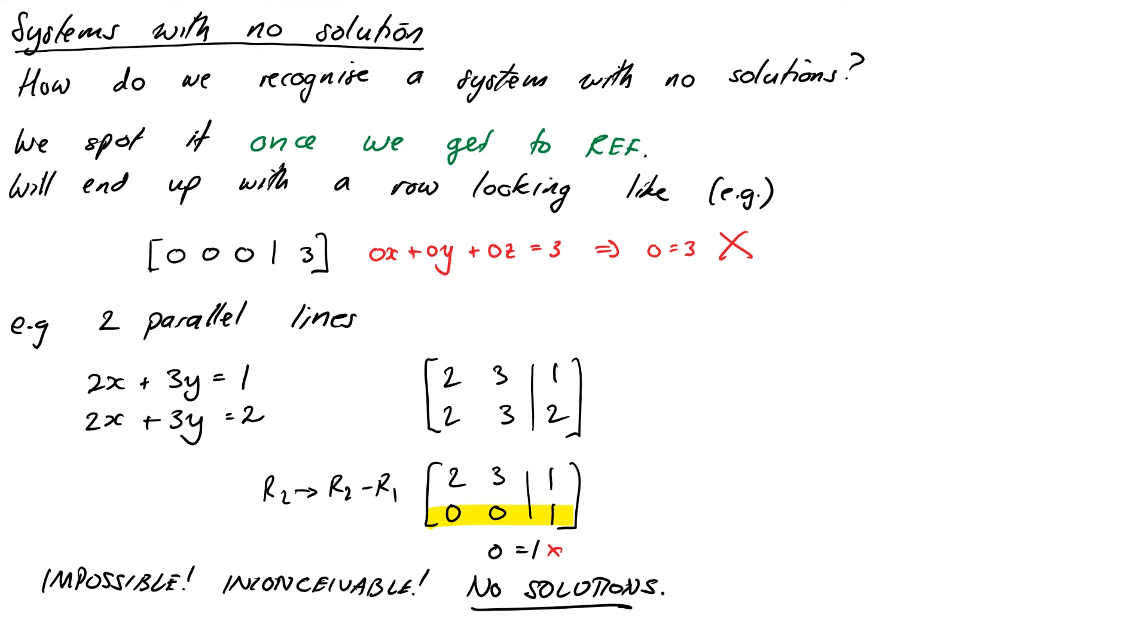All right. So now we have a method that we can use to systematically solve systems of any size or shape. We can cope with infinitely many solutions by introducing parameters for our general solution. And we know what to do if we get systems, or we know how to spot systems with no solution. So to kind of sum it up in a couple of steps, the method is, here's the grand seven-step process for solving linear systems.